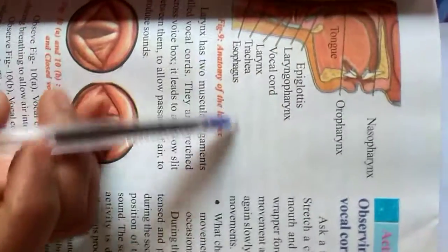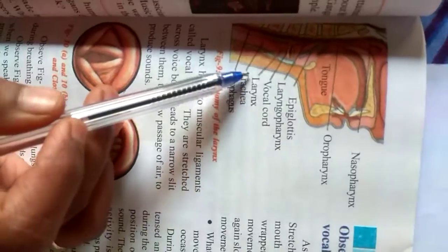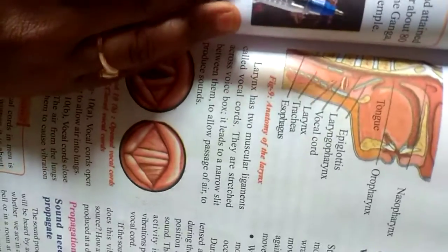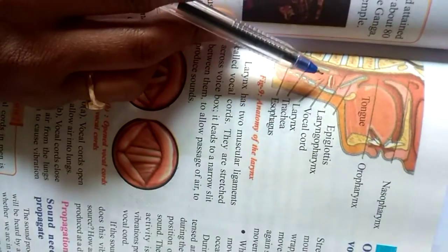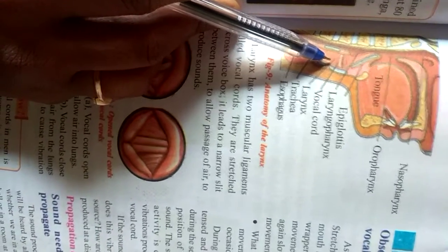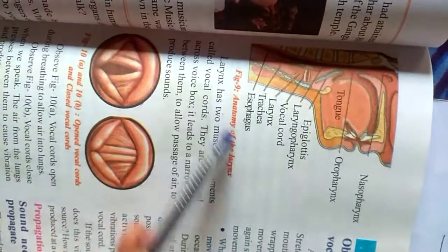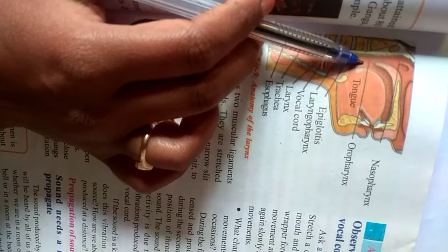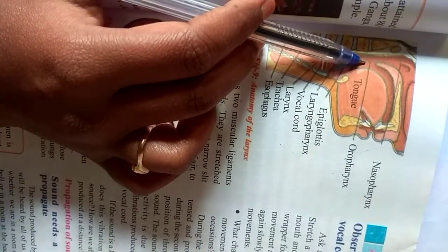This is Figure 9. This is the larynx. A small tube-like structure is the larynx, and this is the most important part for the production of sound. This is our human mouth. This is the tongue. This is the nasopharynx, meaning nose-related pharynx, and oropharynx, meaning it is related to the mouth.